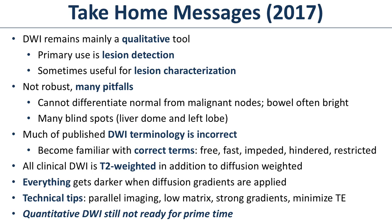Much of the terminology that radiologists have used over the years for diffusion-weighted imaging is incorrect. I have to thank Nate White, Anders Dale, and David Caro for teaching me the correct terms, which are free, fast, impeded, hindered, and restricted — and we'll talk more about those terms later.